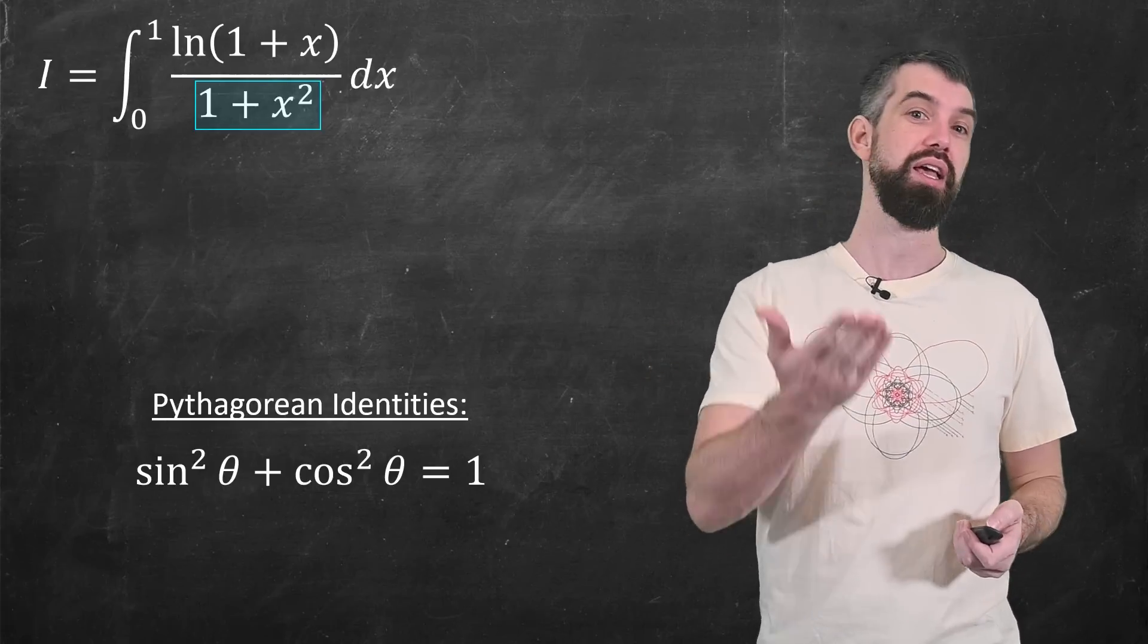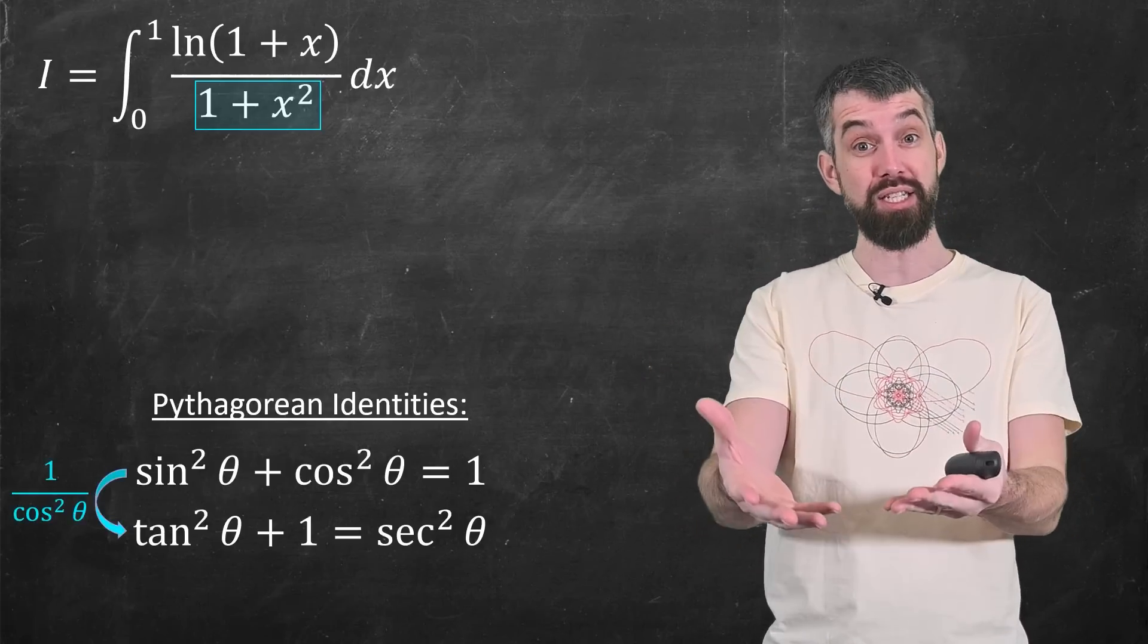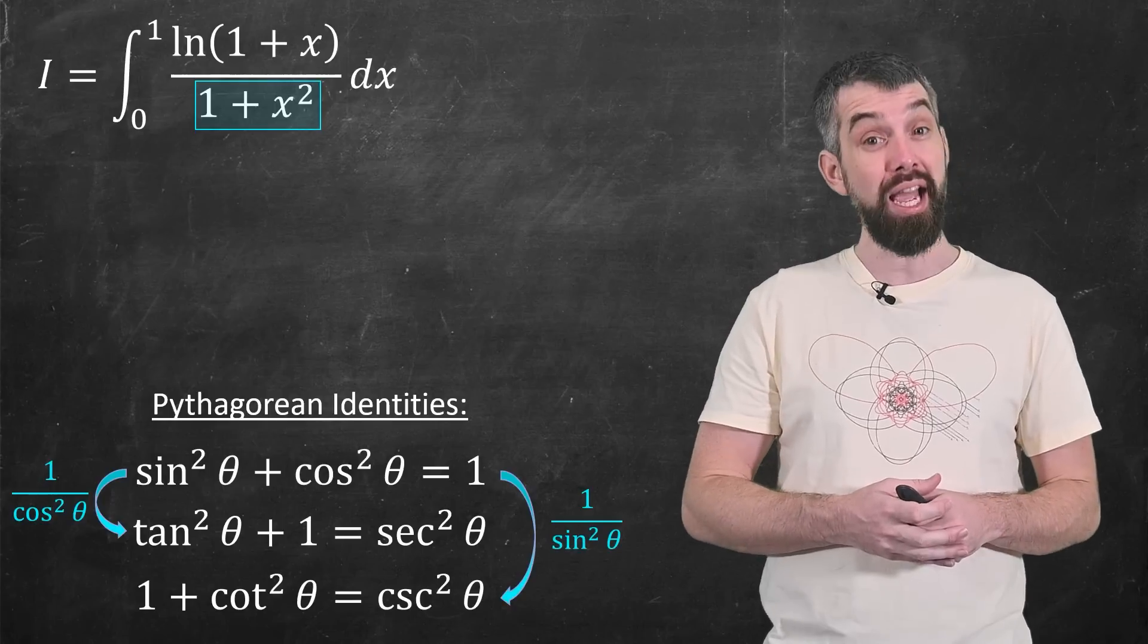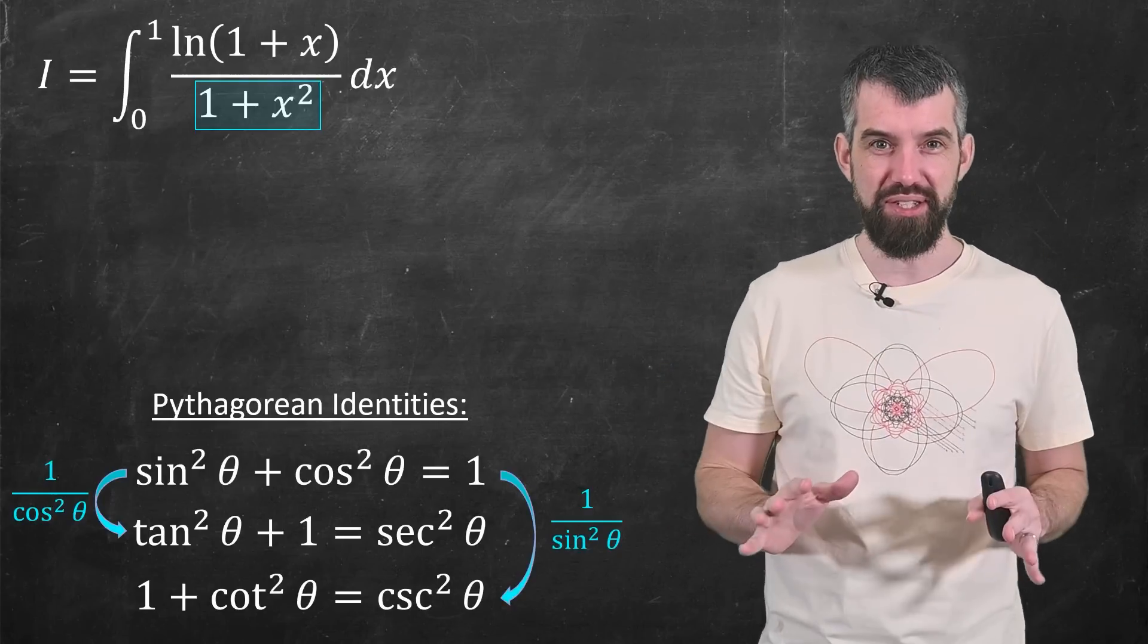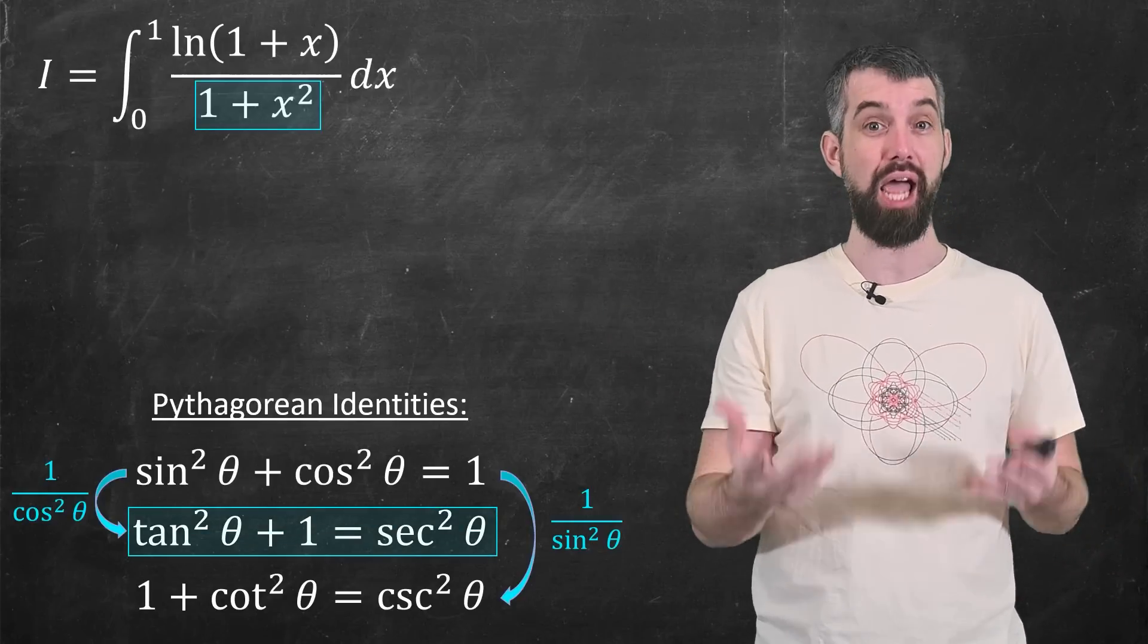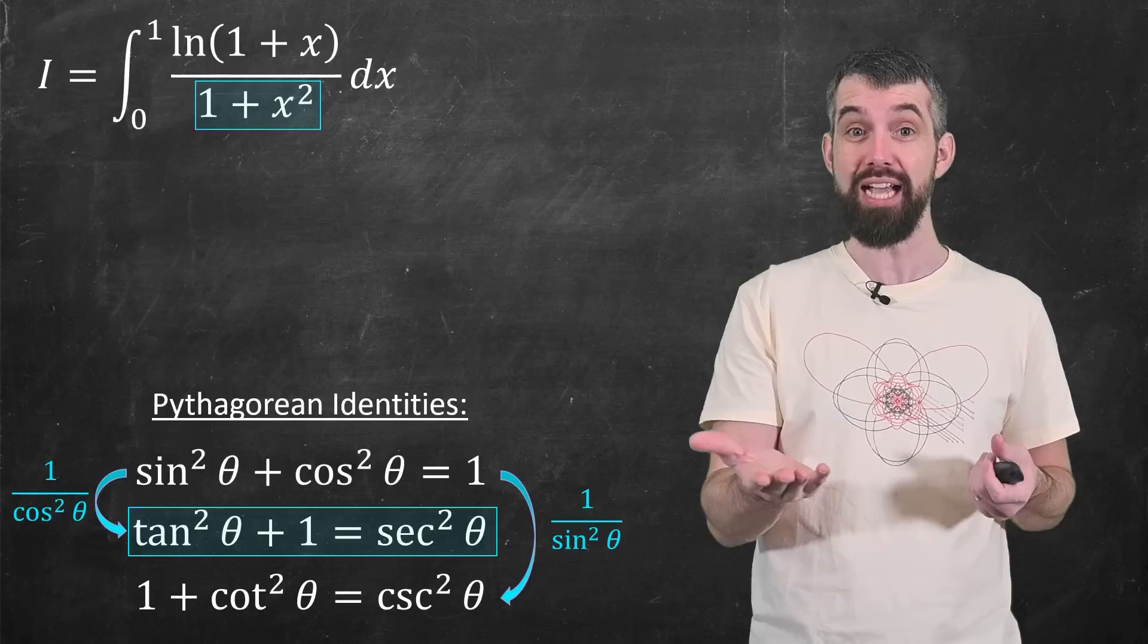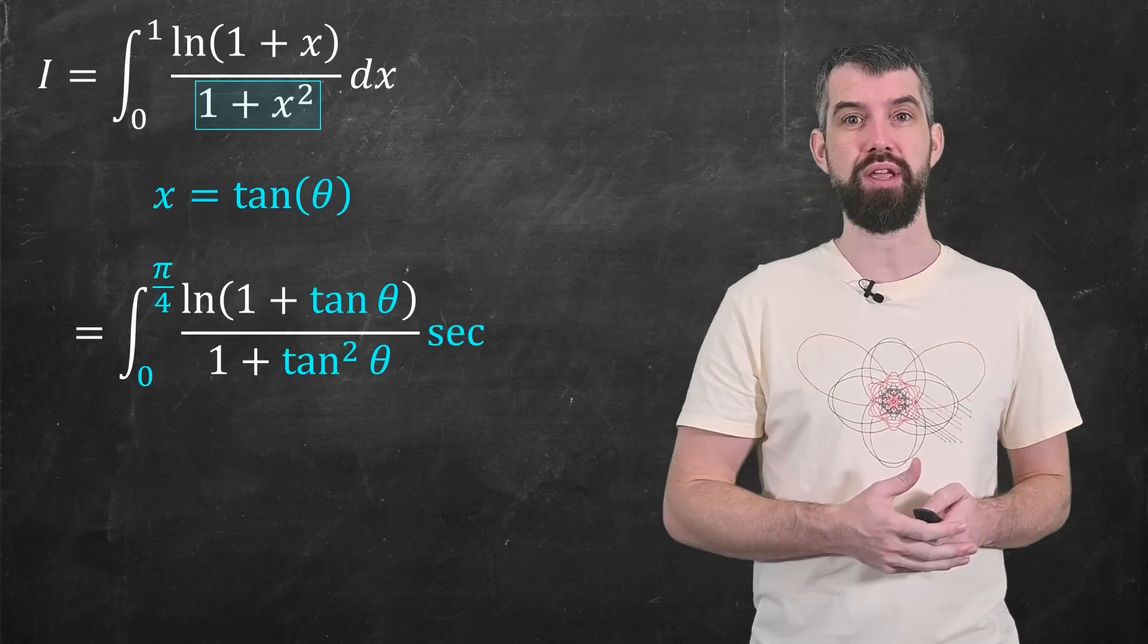Sin squared plus cos squared is 1. If you divide the top and the bottom by cos squared, you get tan squared plus 1 equals secant squared. And if instead you divide it by sin squared, you'd get 1 plus cotangent squared is cosecant squared. These are always in my toolbox, and it looks like it's actually the middle of those that lines up with the idea of 1 plus x squared. I will set x equals to tan theta.